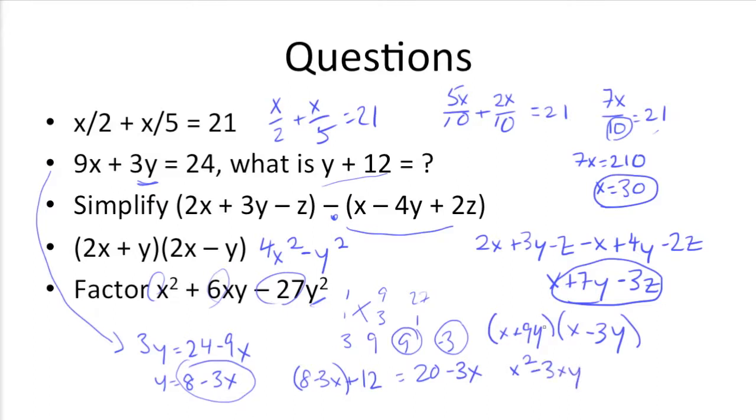Inside, 9y times x is +9xy. And last, 9y times -3y is -27y². And then to simplify like terms, we have -3xy + 9xy, which gets us 6xy. And we get x² + 6xy - 27y². And that's what we had.